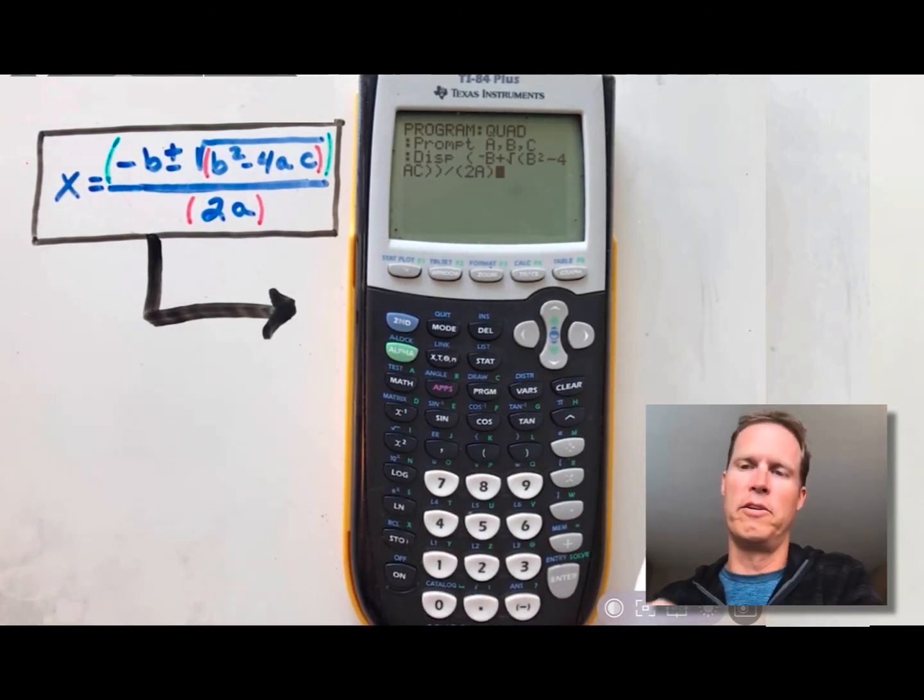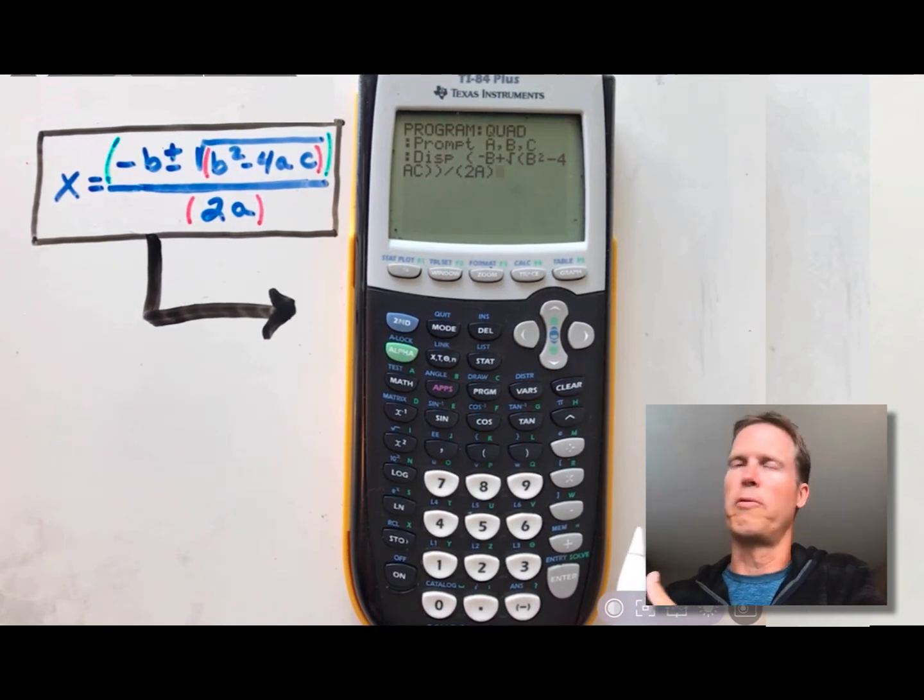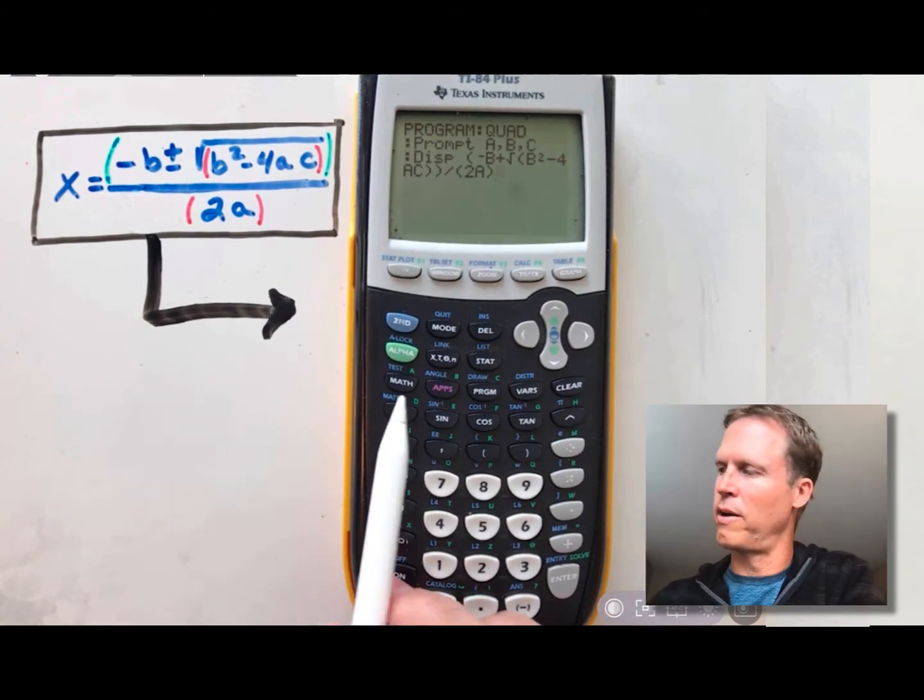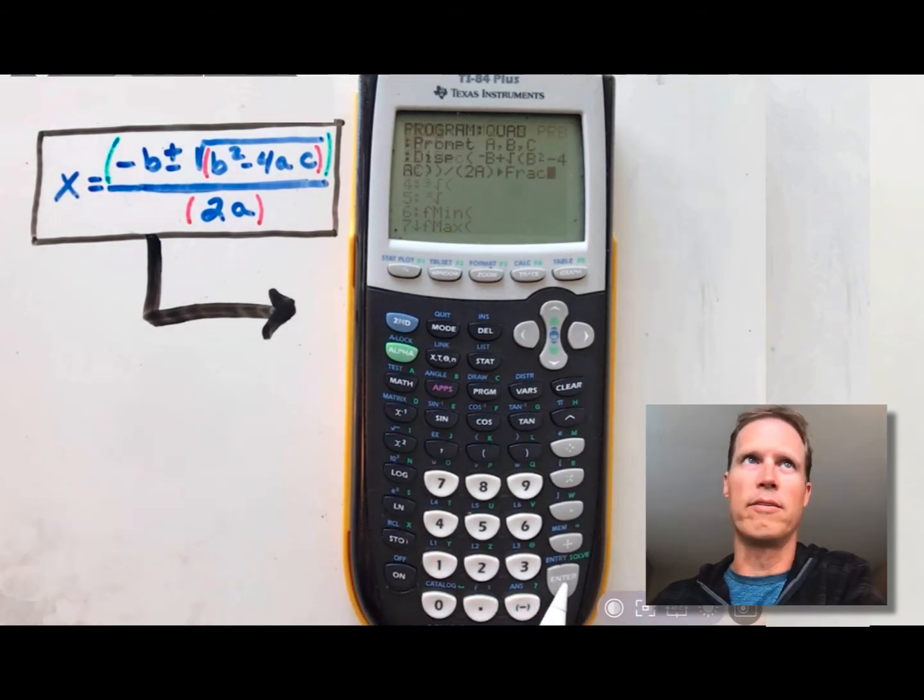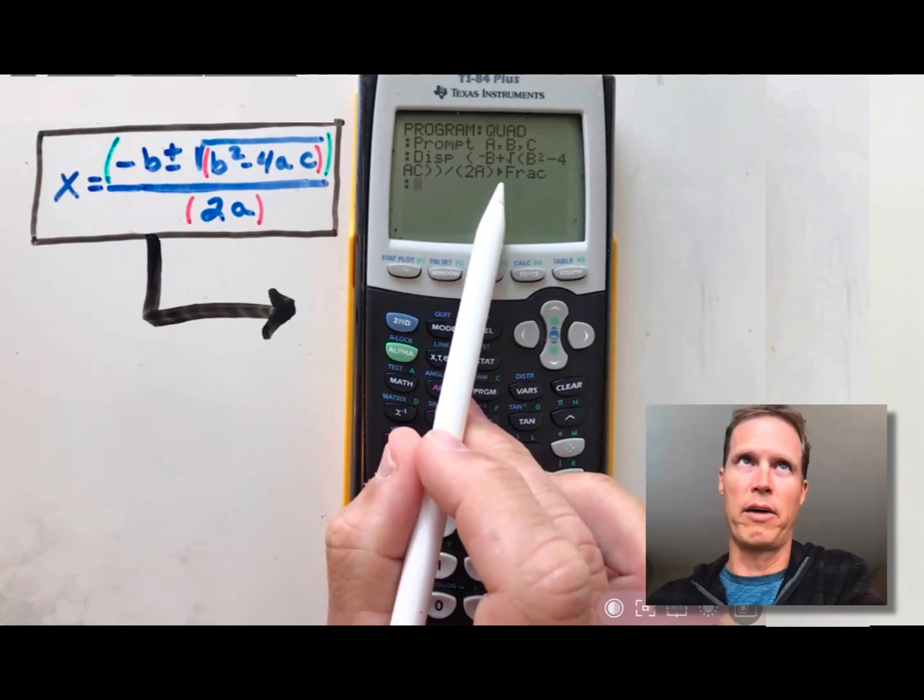Now, what I also want you to do is sometimes these answers come out as nice fractions. So if you want to get a nice fraction for your quadratic formula to come out, just press math, enter, enter. That'll change your answer also to a fraction if it ever happens to work out that way.